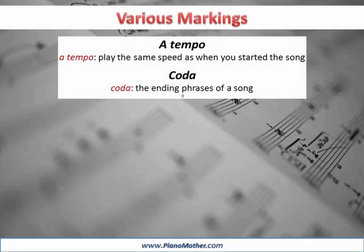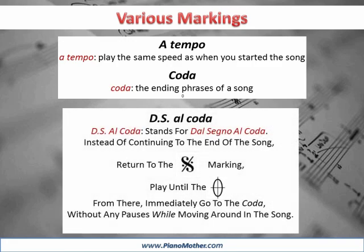Various markings. A tempo — play the same speed as when you started the song. Coda — the ending phrases of a song. D.S. al Coda stands for Dal Segno al Coda. Instead of continuing to the end of the song, return to this marking, play until the coda marking, then immediately go to the coda without any pauses while moving around in the song.